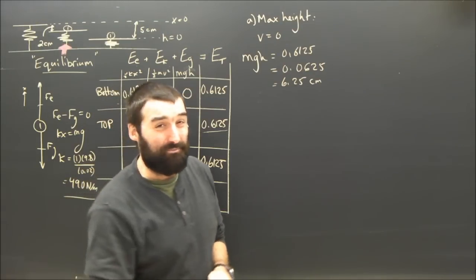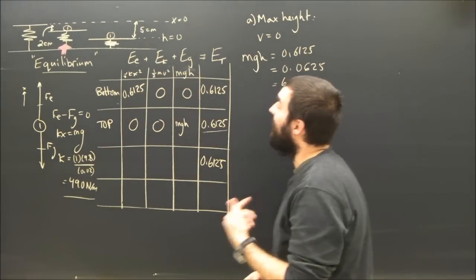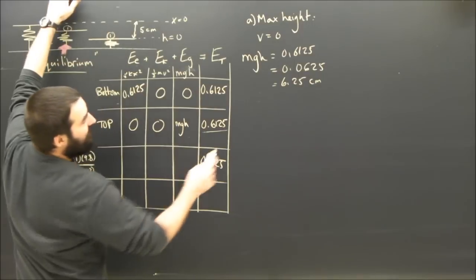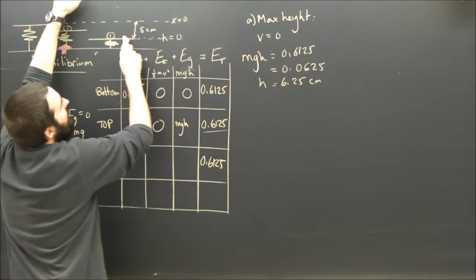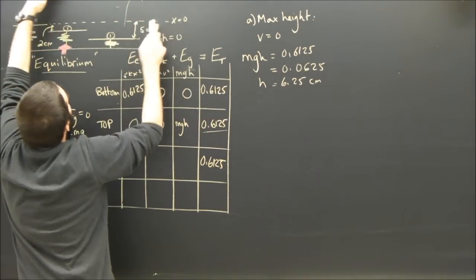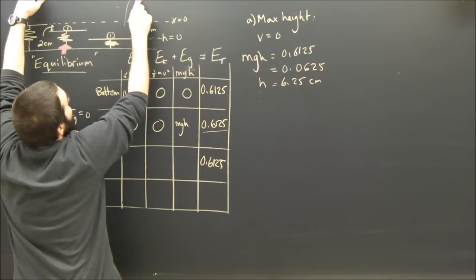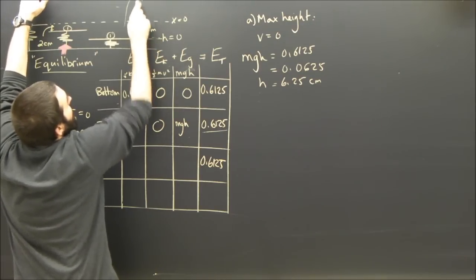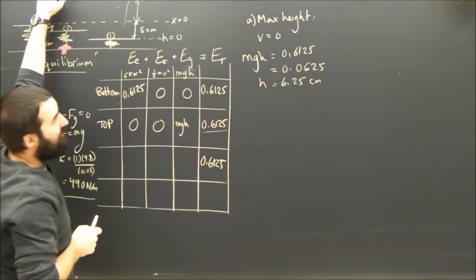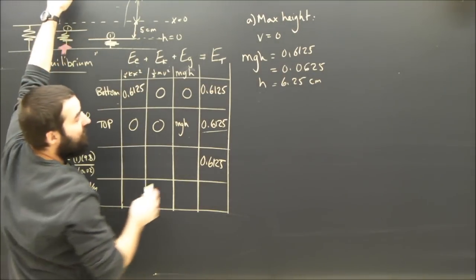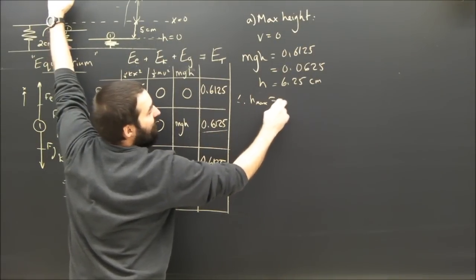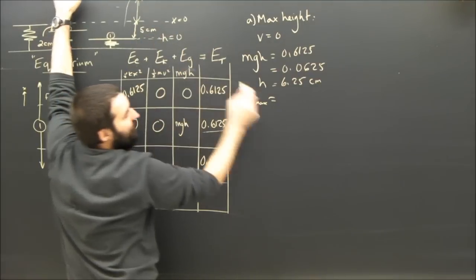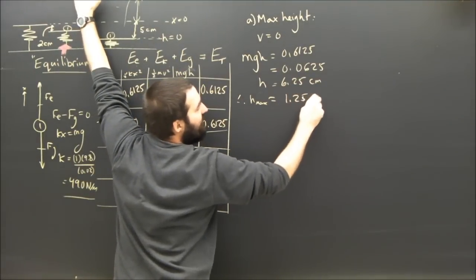But that's not the answer to the question. Because the question said, what was the height of the object over the unstretched spring? And we defined H to be from here, right? The ball is going to fly up into the air and it's going to get to some maximum height above the unstretched value. It's not going to be 6 above here, it's going to be 6 above here. So therefore, the answer is that H max is, in fact, only 6 minus 5, only 1.25 centimeters.